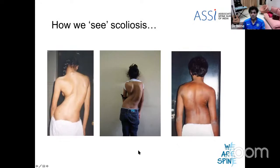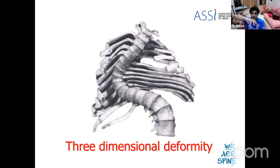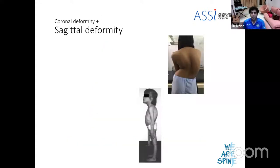We see scoliosis as a curve — we look at the kid from the back and see an S-shaped curve. But in reality, scoliosis is a three-dimensional deformity. You must start looking at scoliosis not like a C or an S but as a twist in the spine. Think of the spine as a bunch of carom coins stacked one on top of the other — you start twisting these coins and they spin out of their center of rotation. It's not only an S but actually a twist in the spine, and that twist leads to something that looks like an S.